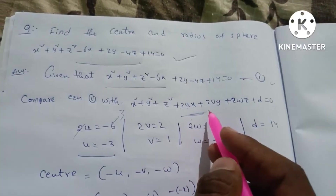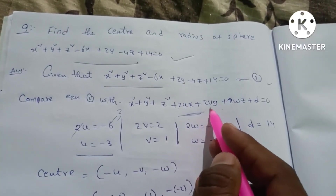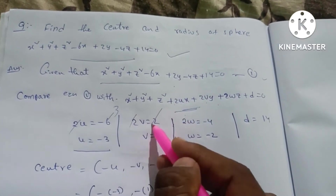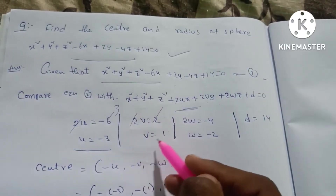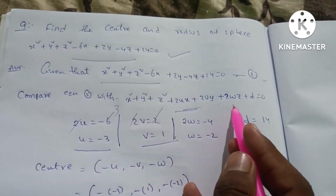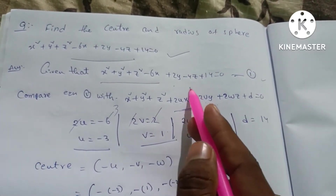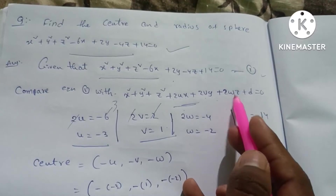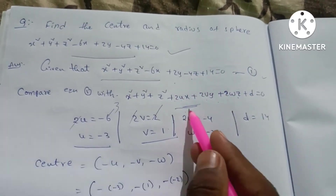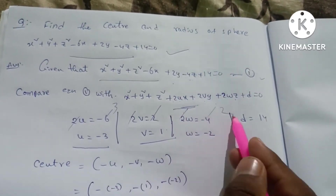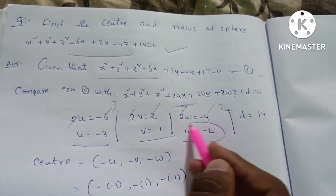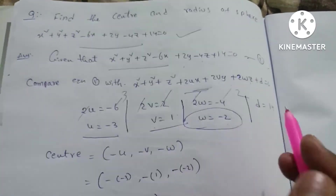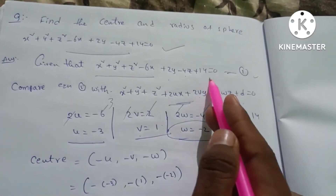Next, 2v equals 2, so 2 cancels and v equals 1. Next, 2w equals minus 4, so w equals minus 2. Now we have u, v, w. And d equals 14.